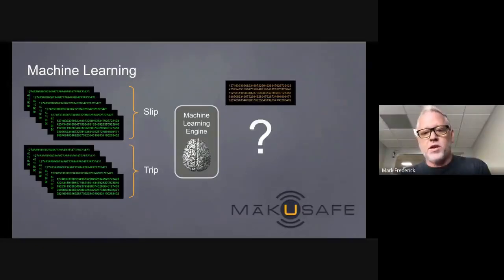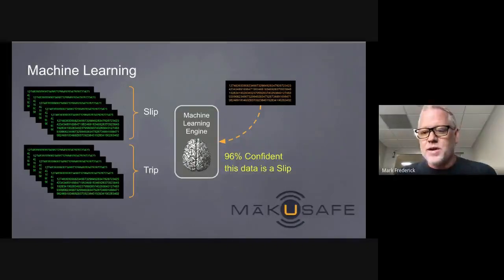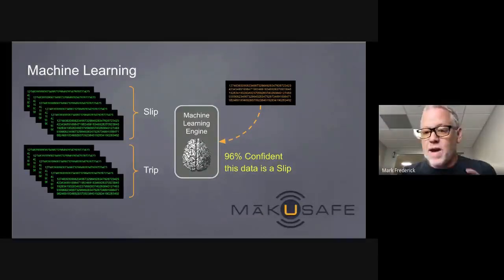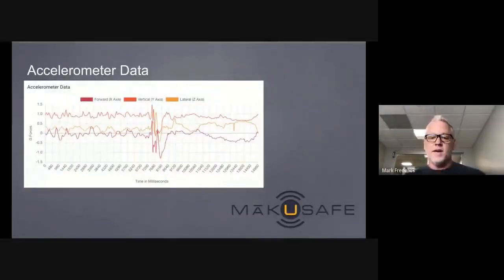We take this data and we feed it into our machine learning engine, and we train it just like a child would be trained on the difference between dog and cat. Eventually, when we show a new piece of data to that machine learning model, it says, oh yeah, I recognize that, I know what it is, that's a slip. For you and me, it's almost impossible to see, but for the machine learning system, it can say I'm 96% confident that I recognize that data signature.